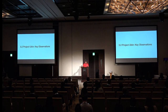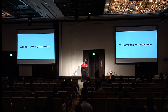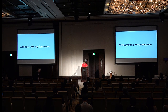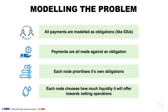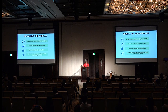Next, I'll share some observations made by third parties — essentially observations in the Ubin report — highlighting a few challenges and achievements. The problem was broken down into four pieces: all payments were modeled as obligations; payments were made against all obligations; each node would prioritize its own obligations; and each node would choose how much liquidity it offers towards netting operations. These were implementation choices made for the prototype.